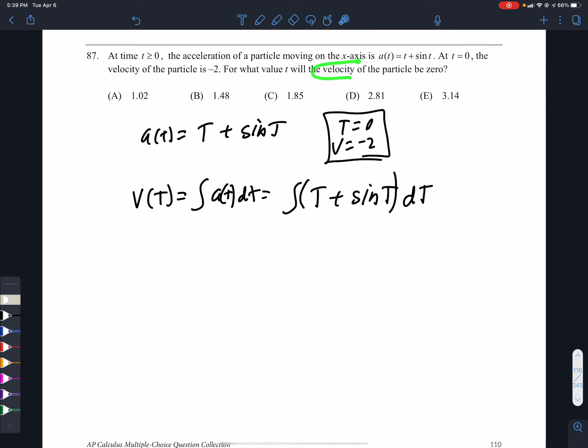They want to know when the velocity will be 0, so we need the velocity function. We should know that the integral of the acceleration gives you velocity. So I'm going to integrate that. My velocity will be t squared over 2 minus cos t plus c. Don't forget your plus c on an indefinite integral.